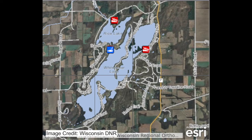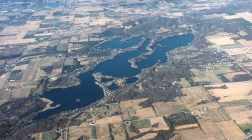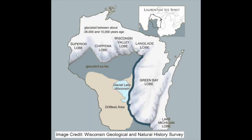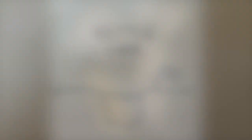Whitewater Lake and Rice Lake are both examples of larger kettle lakes, but many examples of smaller kettle lakes can be found in any of the areas that were covered by glaciers in Wisconsin. Looking at this map you can see all the areas in Wisconsin that were covered by glaciers, specifically by the Laurentide Ice Sheet. Any of these areas are places where you might find a kettle lake.